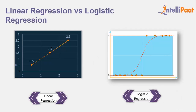Now let's understand the difference between logistic regression and linear regression. In linear regression, we fit a straight line — for a given value of x, there exists a y value that falls on the line, meaning there is a linear relationship between y and x. For example, as an employee's age increases, the employee's salary increases linearly.